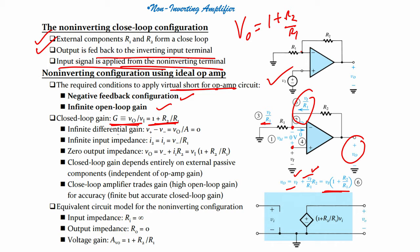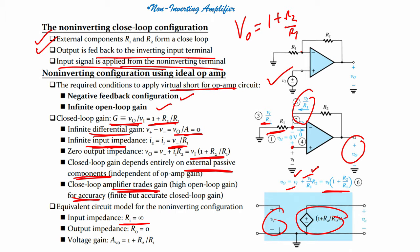The equivalent circuit model shows: input impedance is infinite, output impedance is 0, and the closed-loop gain is 1 + R2/R1. The closed-loop gain depends entirely on the external passive components R1 and R2, similar to what we saw for the inverting amplifier.